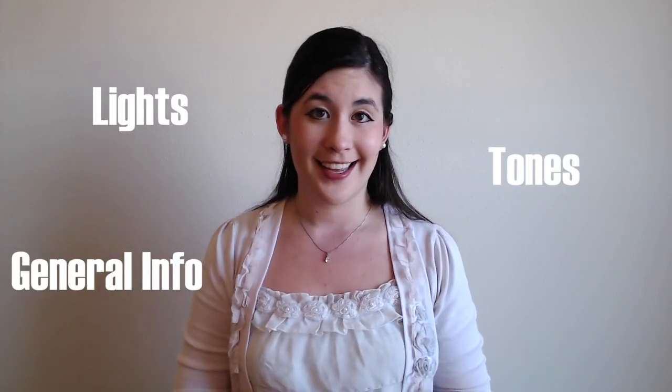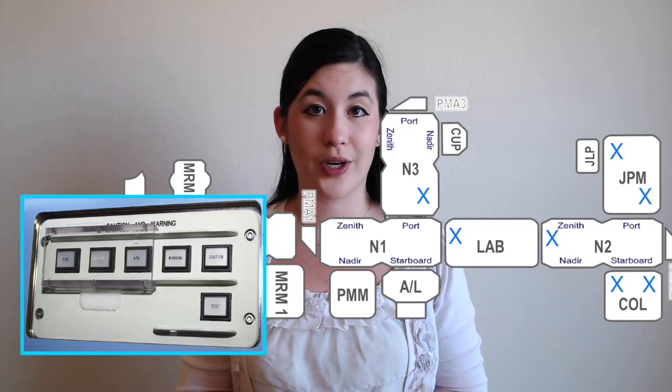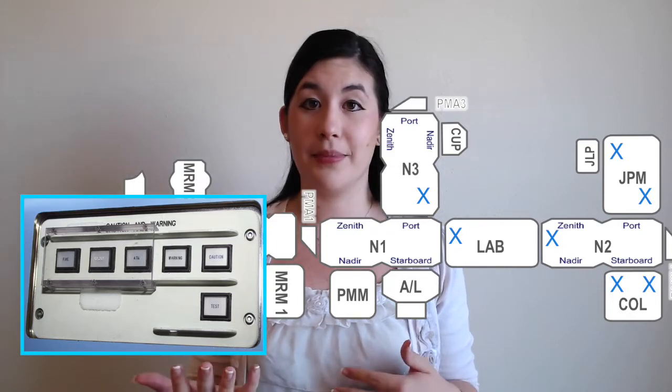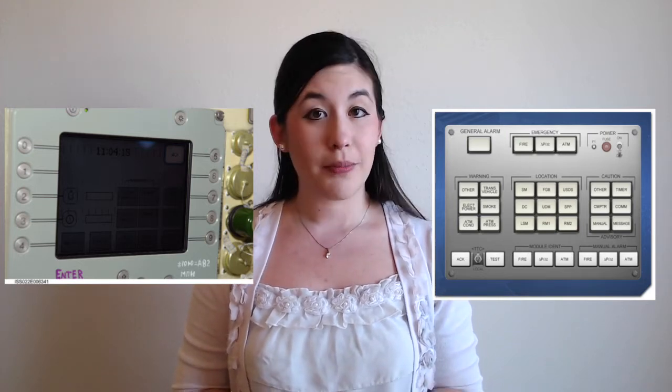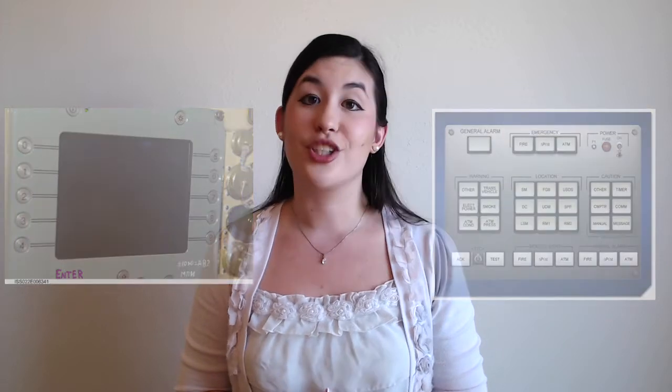There's plenty of hardware associated with caution and warning on board the space station. All this hardware helps to provide lights, tones, and general information about our different events. On the US side, there are seven caution and warning panels throughout the US, Columbus, and JEM modules. We also have the PCS, which are those laptops that provide for commanding and caution and warning, and they provide information on any event going on all over the space station, including all of our international partners. On the Russian side, there's the PSS and the MPEs, which are their versions of caution warning panels, as well as the Russian laptop, which only provides information on caution warning events inside the Russian segment.